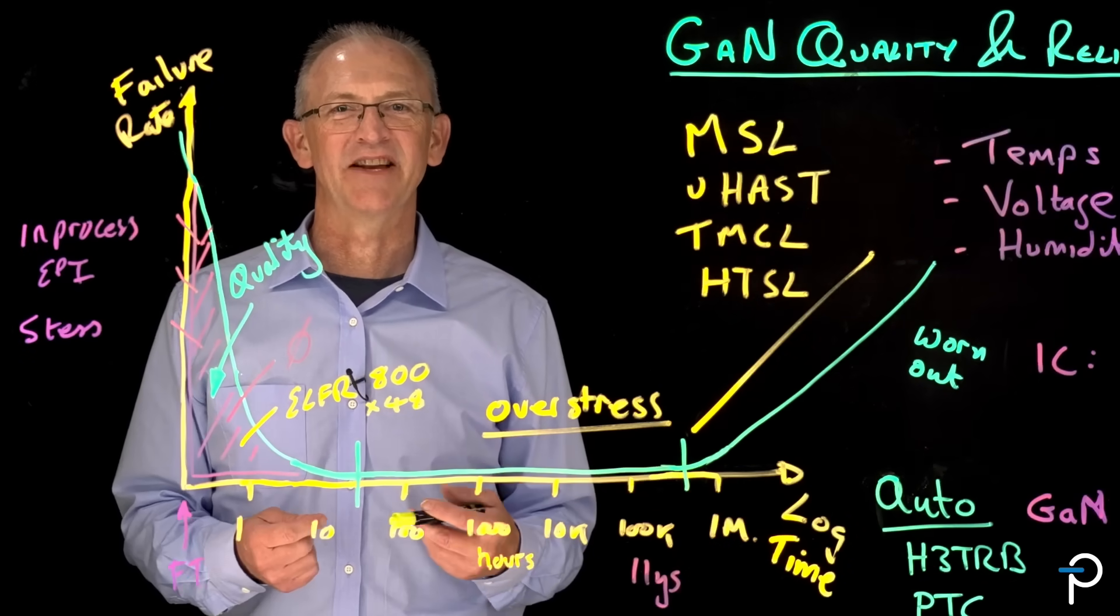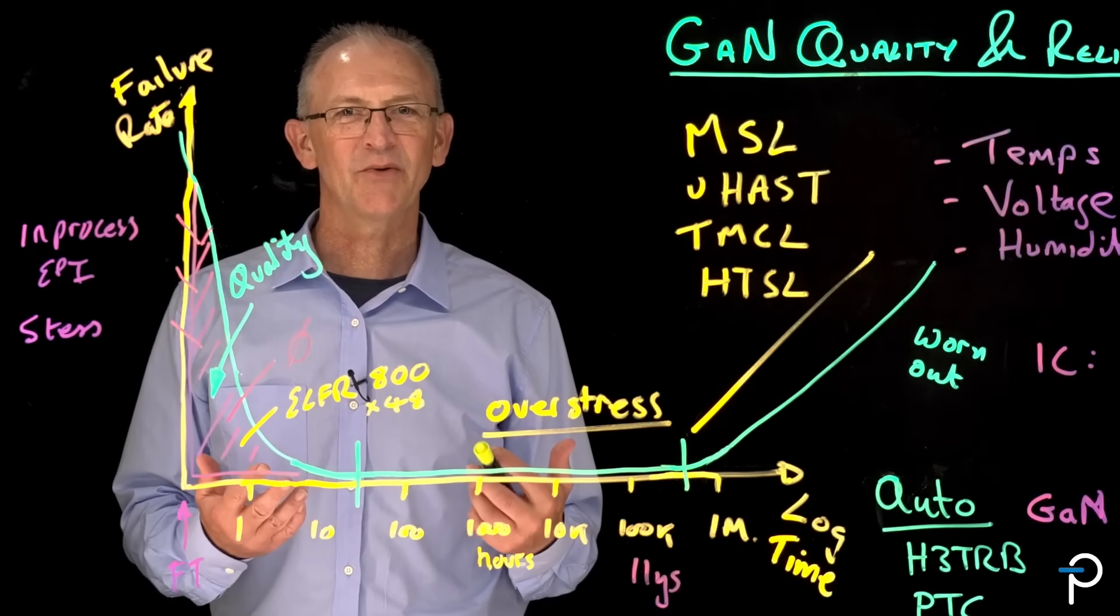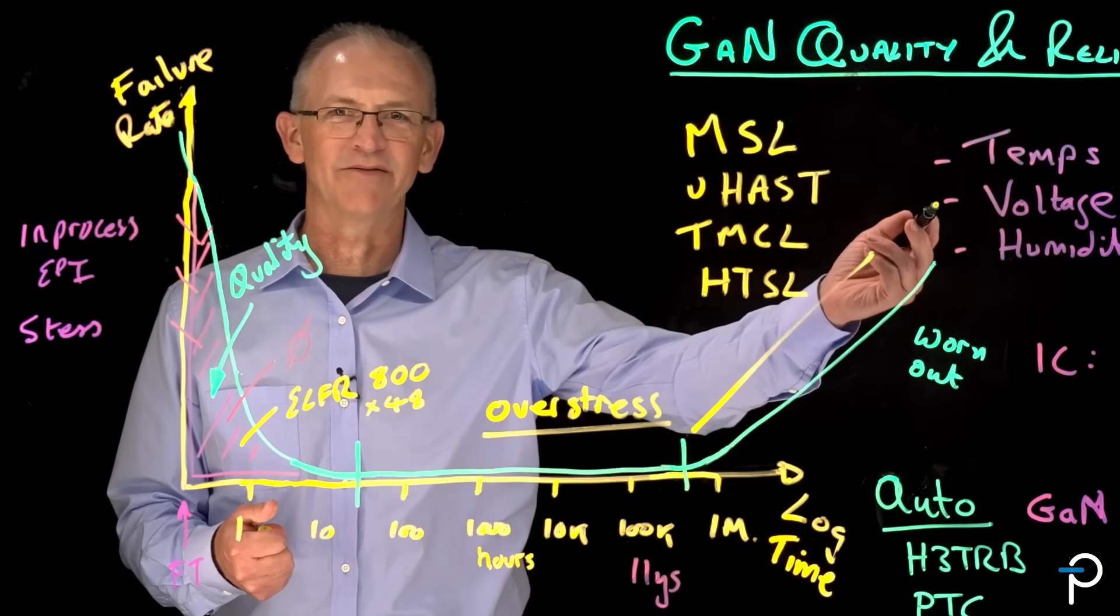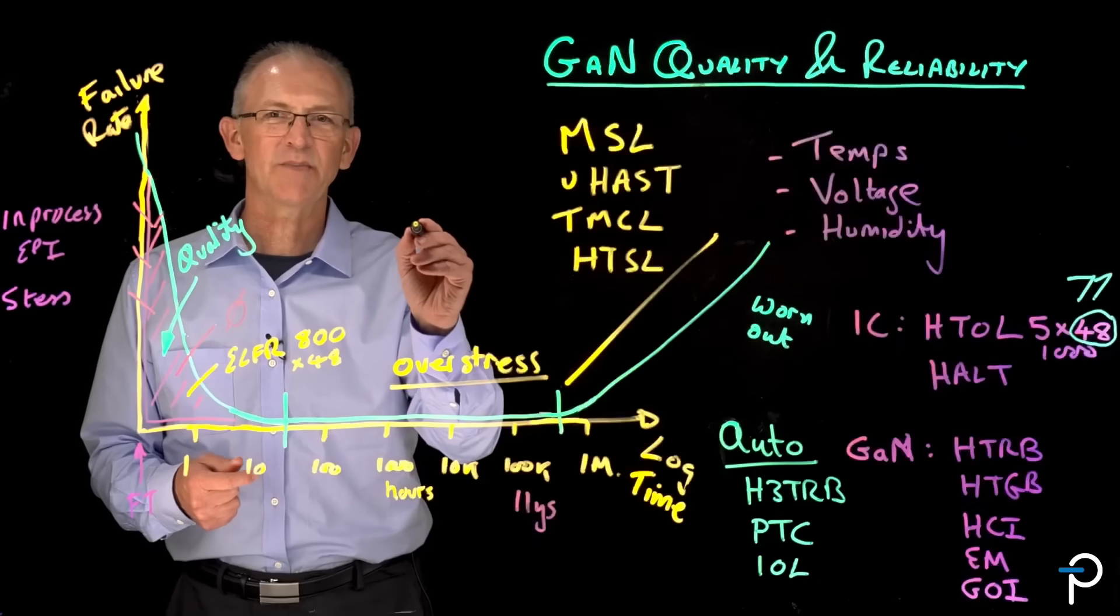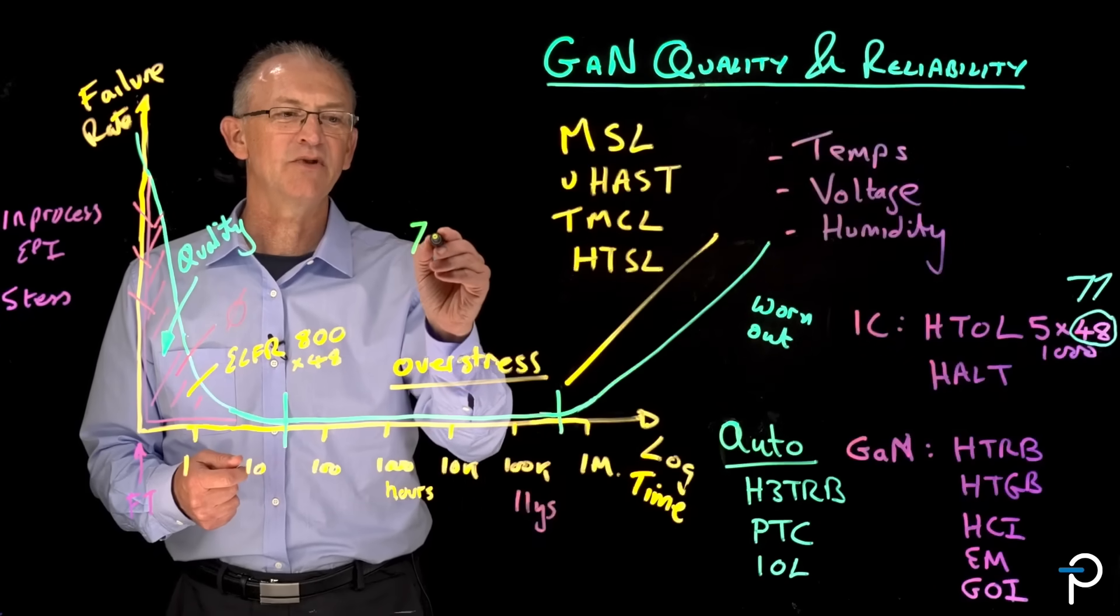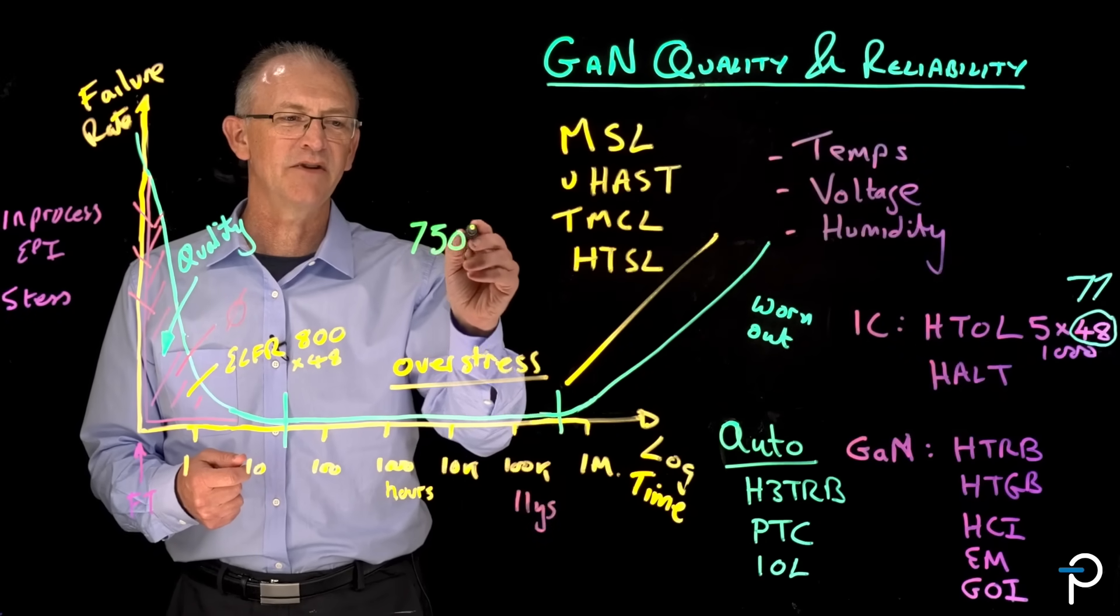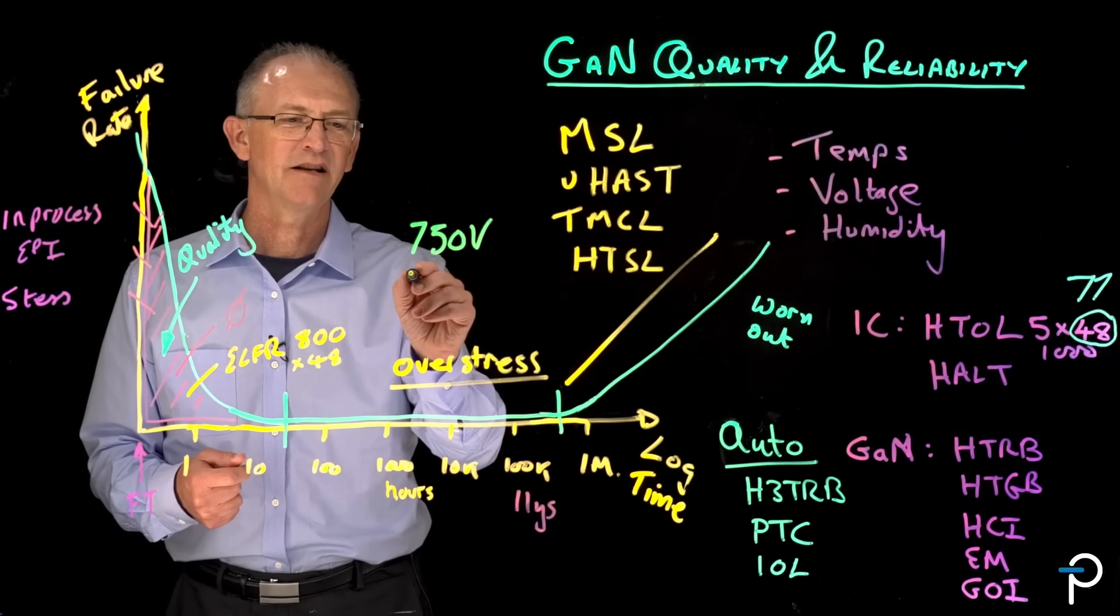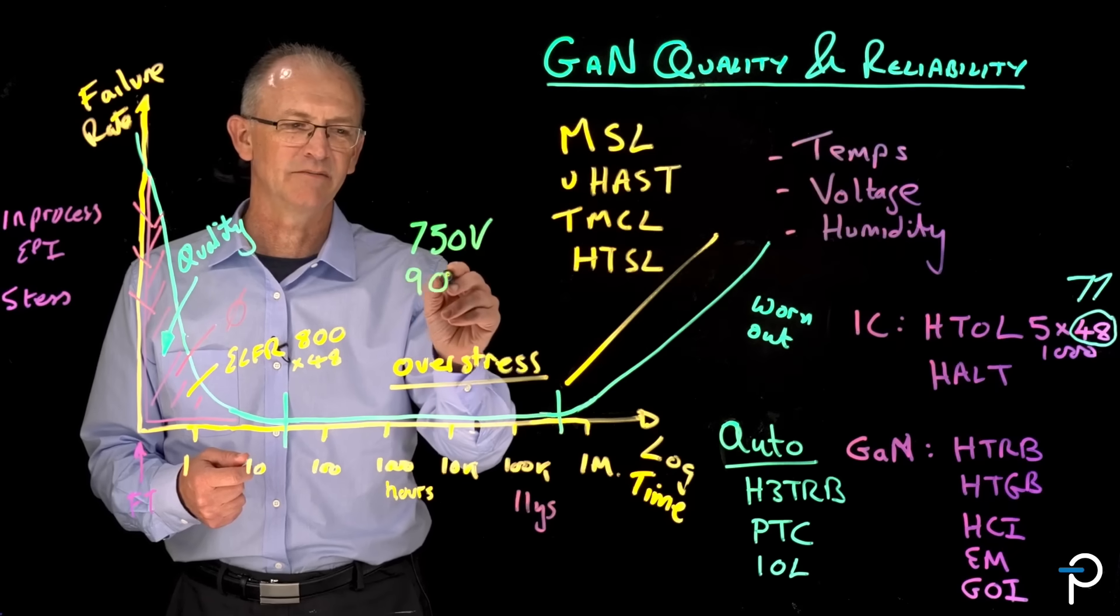So one of the most important parts of a power semiconductor is its ability to withstand voltage. So let's talk about robustness under high voltage conditions. We specify two types of GaN, 750-volt BV GaN and 900-volt BV GaN.